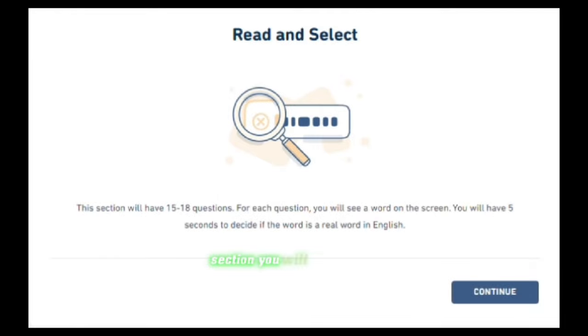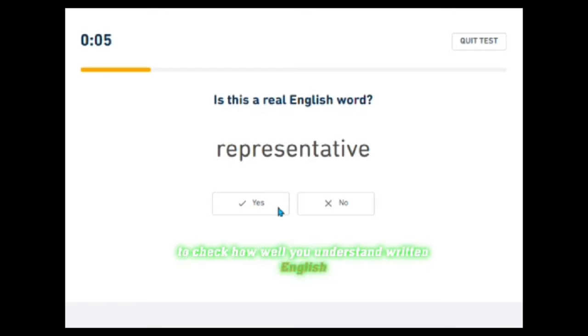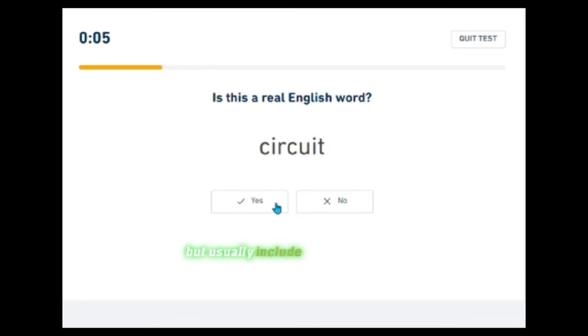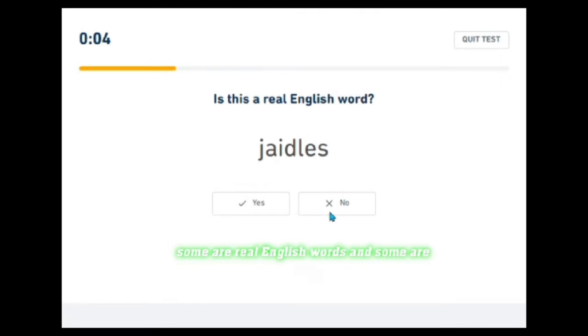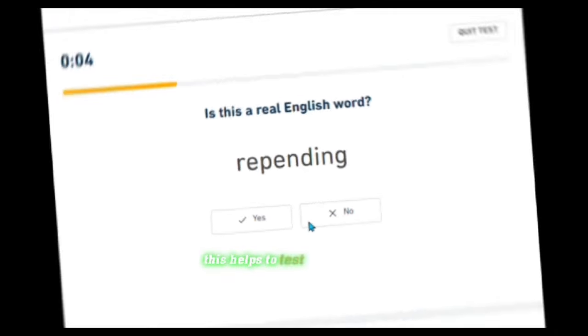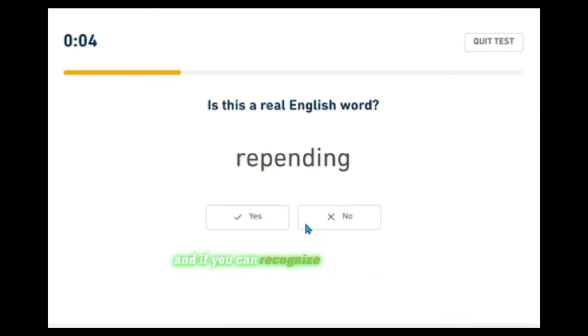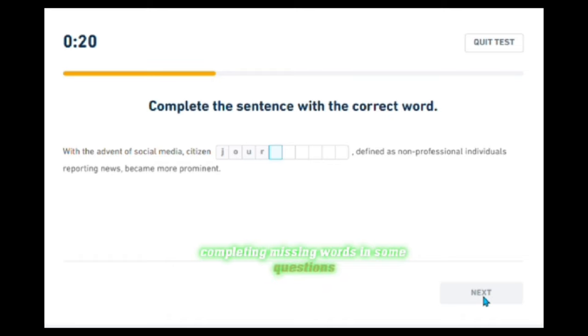In the reading section, you will see short texts, sentences, or even single words to check how well you understand written English. The tasks can be different but usually include finding real English words. You will get a list of words—some are real English words and some are not. Your job is to choose the real words from the list. This helps to test your vocabulary and if you can recognize real English words.